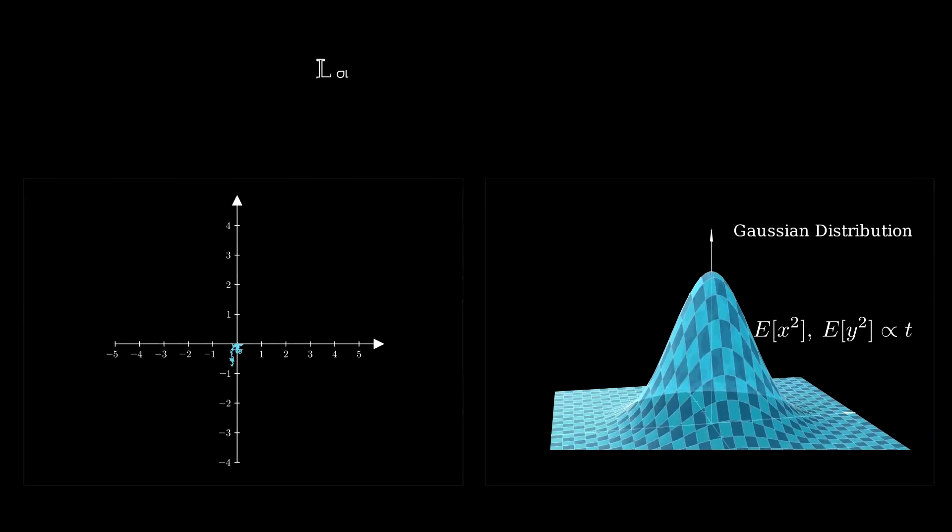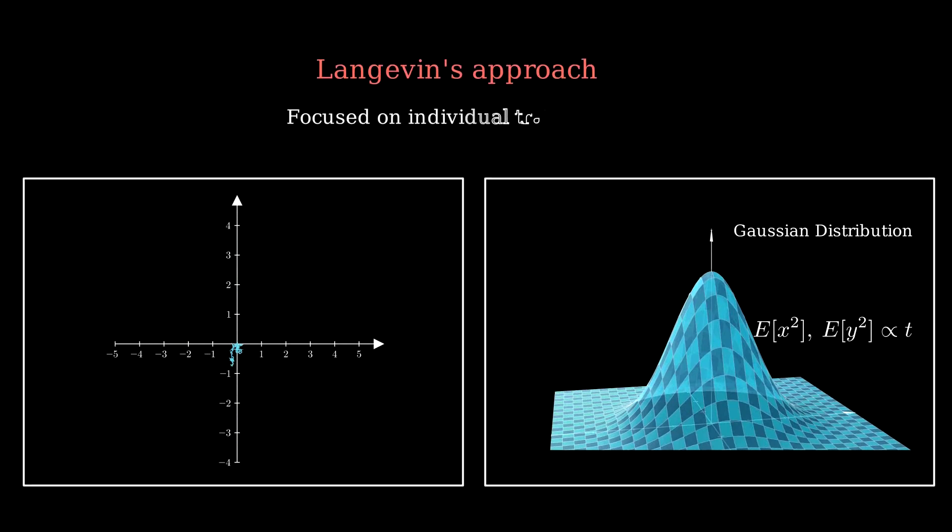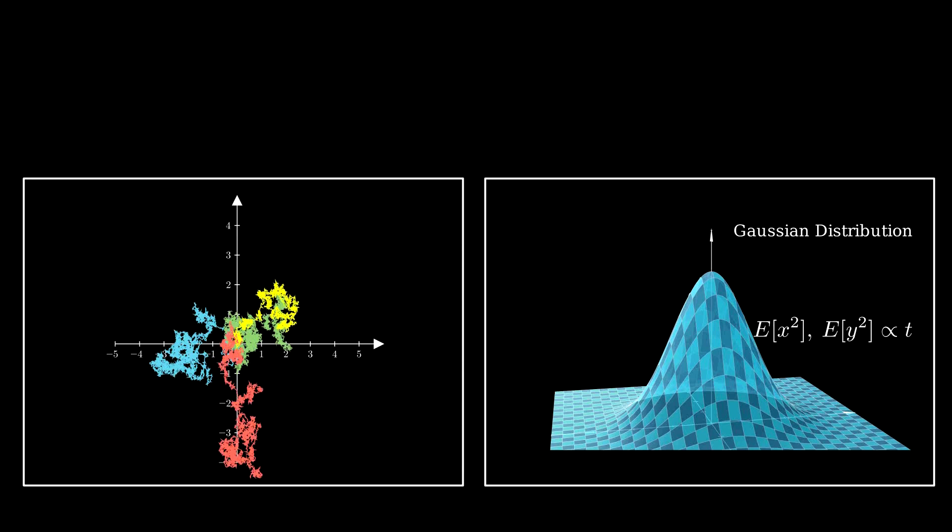The main difference between Einstein's approach and Langevin's one is that the latter focused on individual trajectories of the Brownian particle out of the statistical ensemble of all the possible ones.